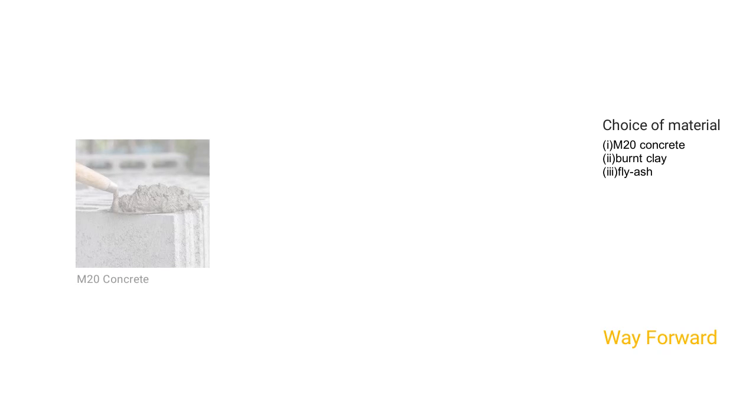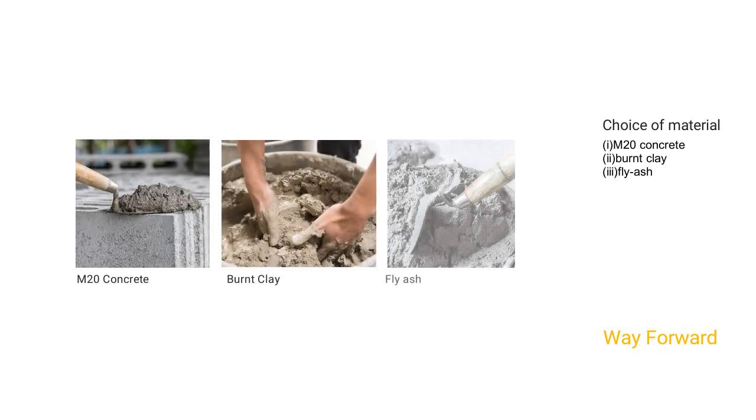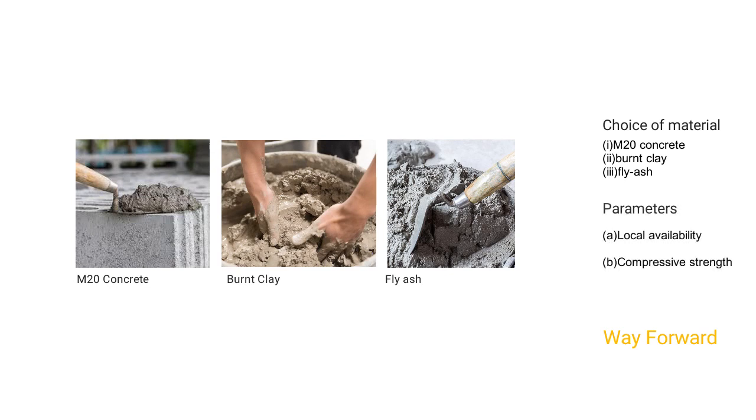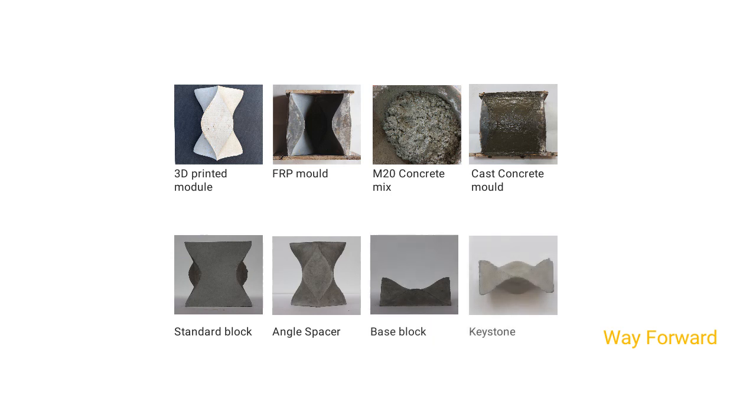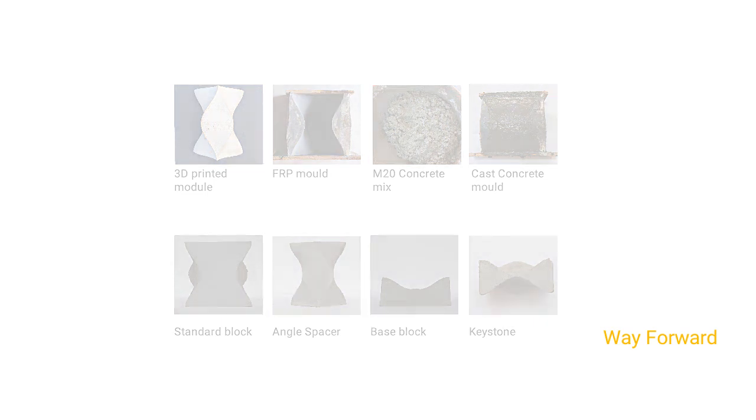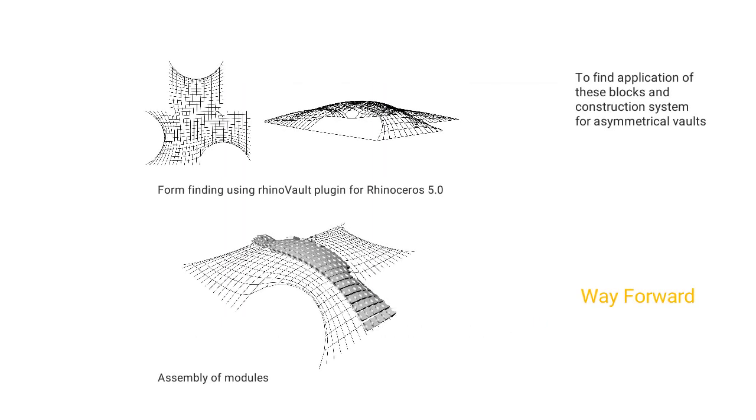There are two aspects in which we are taking this research further. One, choice of material. M20 concrete, burnt clay, and fly ash are chosen as test cases. The choice is based on required compressive strength of the module and local availability of materials. First prototypes are made in M20 concrete: all four types of the blocks - standard block, angle spacer, base block, and keystone. The structural test, handling, and prototyping full-scale structure is ongoing research. Second is to find application of these blocks and construction systems for asymmetrical vaults.